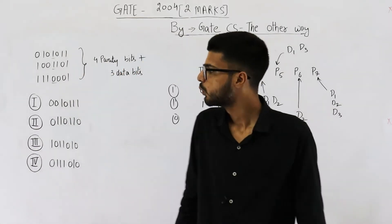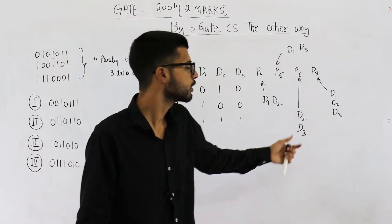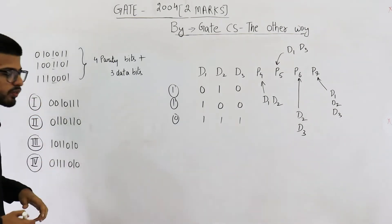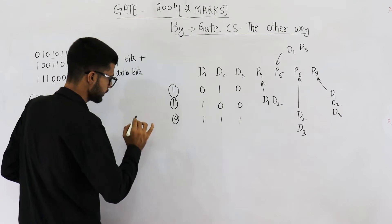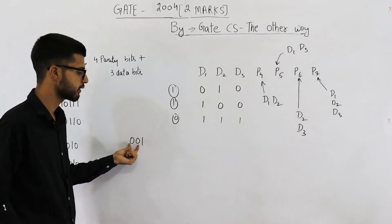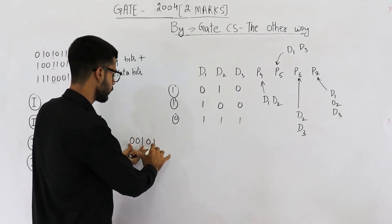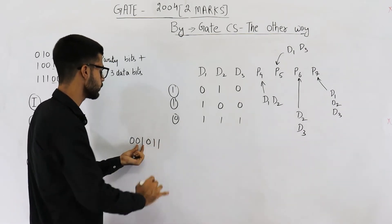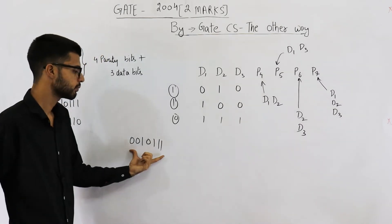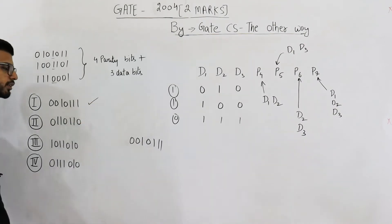Now the question is simple. We just need to analyze each of the four options according to these formulas. The first option has data bits 001. p4 is the parity of d1 and d2, which is 0. Parity of d1 and d3 is 1. Parity of d2 and d3 is also 1. And the overall parity of all three data bits is 1. This matches exactly, so this is a valid code word.